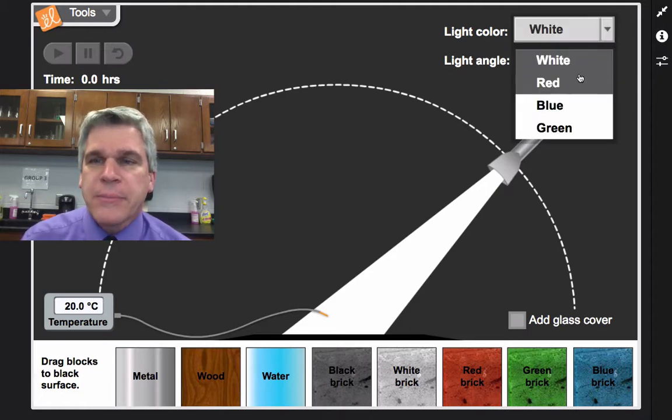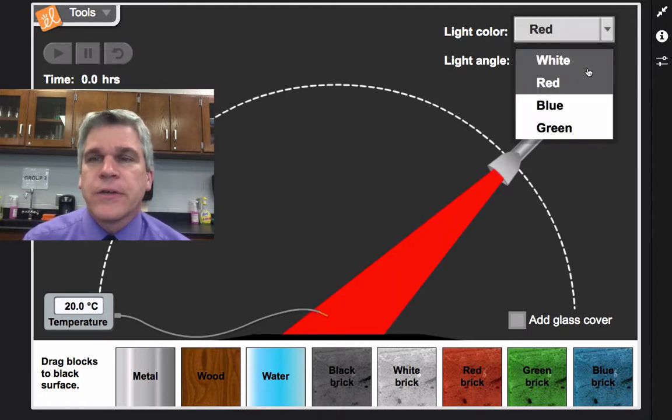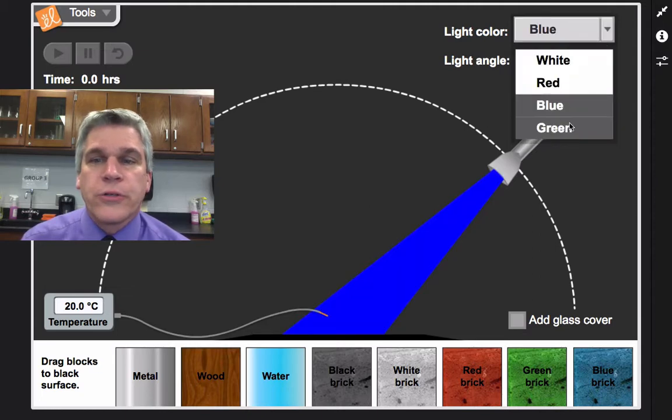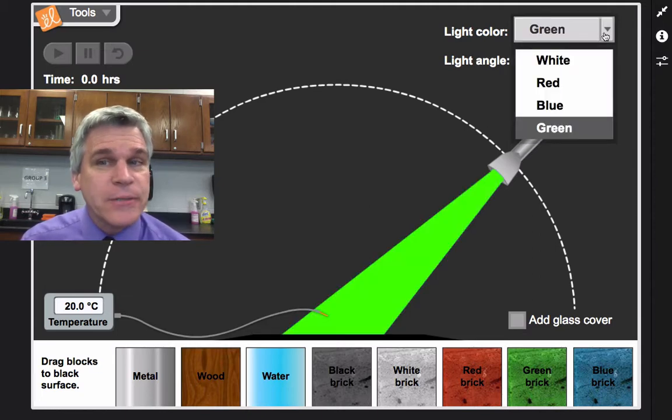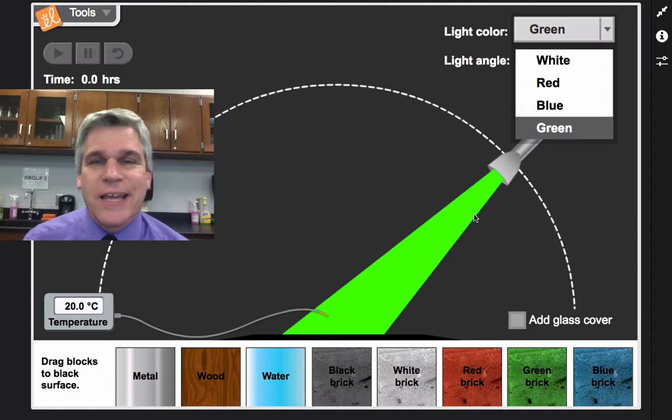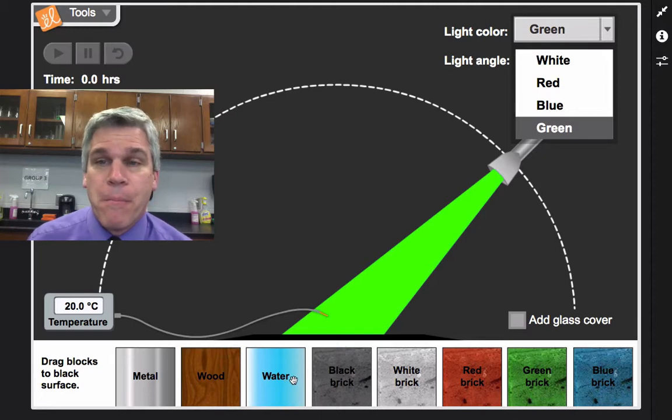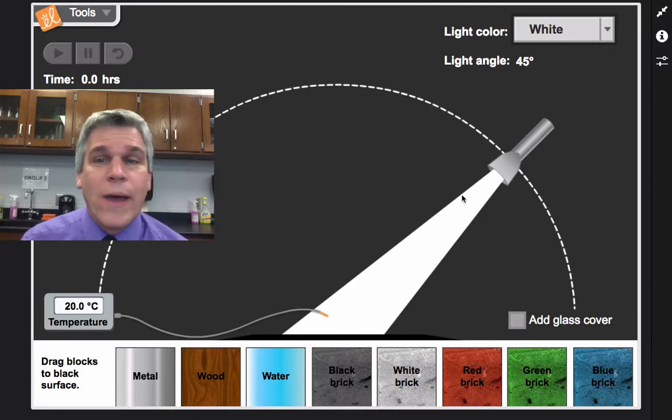But notice I do have some other options. Like I could change to red light or to blue light or to green light. Now, if I did that, I'm introducing a second independent variable. And so I would not necessarily know which of these is going to absorb the heat the most if I'm constantly changing light. So I'm always going to keep white light.